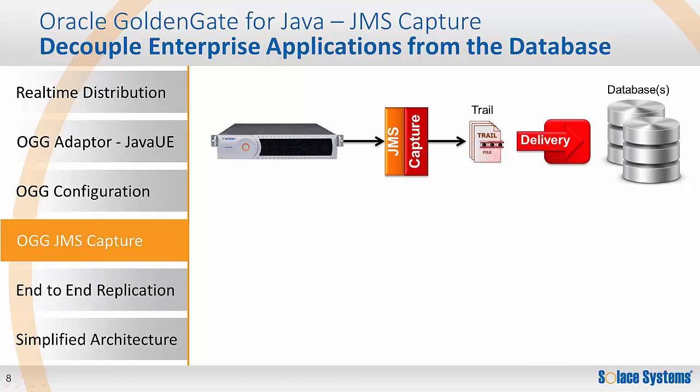The JMS Capture, sometimes called the VAM or Vendor Access Module, allows data that is published normally by enterprise applications to be persisted in the database without the need for the application to perform a database update. In this way, the SOLUS message router can act like a shock absorber, decoupling the application from the database update. The database becomes just another subscriber on the enterprise message bus, which can be scaled independently to meet peak demand without impacting the application.